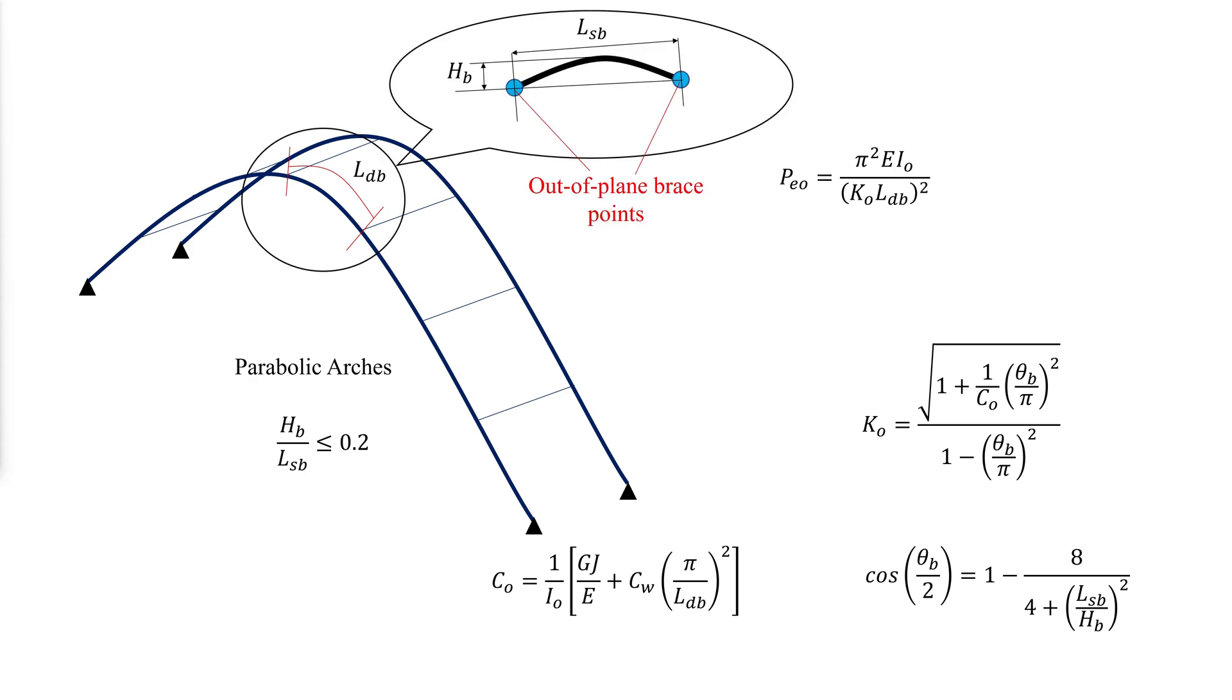Where HB is the rise dimension between the brace points and the apex of the arc segment, and LSB is the span length or chord length between out-of-plane bracings.